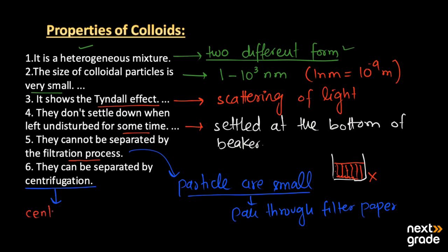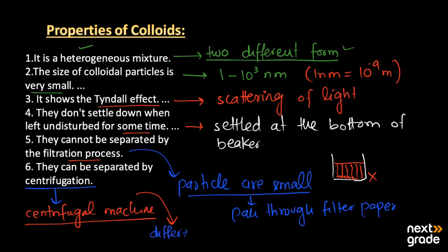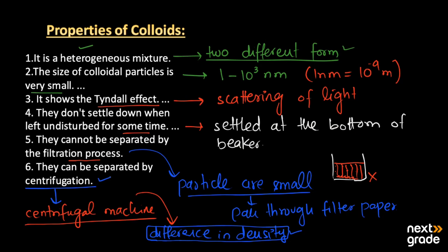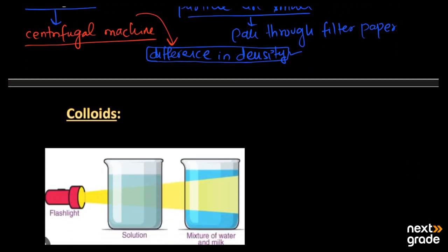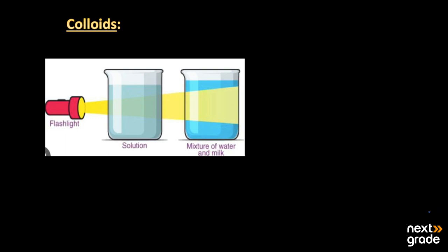Centrifugation is mainly a process in which we use a centrifugation machine for the separation of particles. The separation is based on differences in concentration gradient as well as density. The particles get distributed on the basis of their density in the centrifugal machine — that process is known as centrifugation.